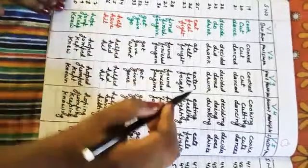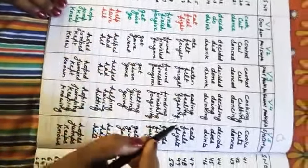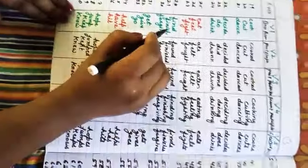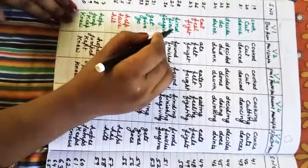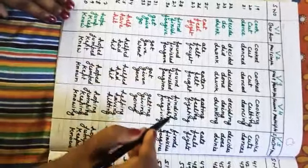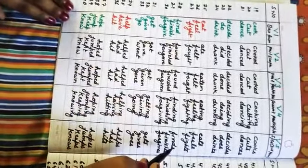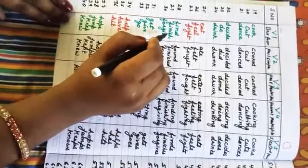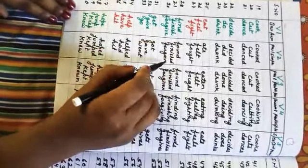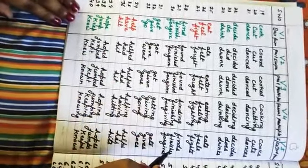Fight — meaning 'ladna' (to fight). Second form: fought. Third form: fought. Fifth form: fights. Find — meaning 'paana' (to find). Second form: found. Third form: found. Fifth form: finds. Finish — meaning 'samat karna / khatam karna' (to finish). Second form: finished. Third form: finished. Fourth form: finishing. Fifth form: finishes.